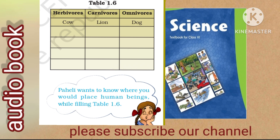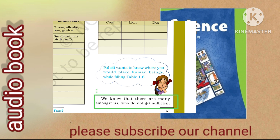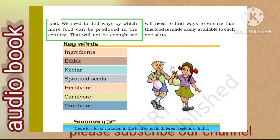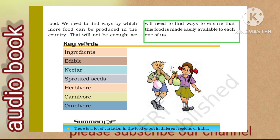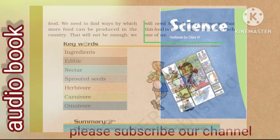Where would you place human beings in table 1.6? Obviously, omnivores. We know that many amongst us do not get sufficient food. We need to find ways by which more food can be produced in the country, and ensure that this food is made easily available to each one of us.